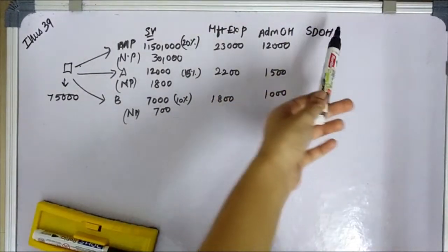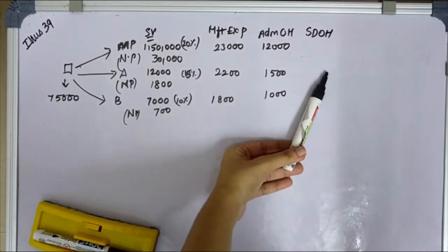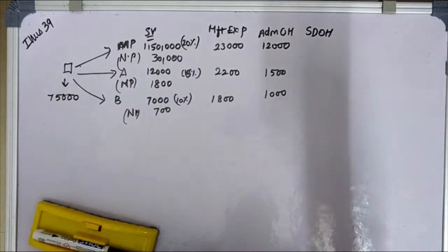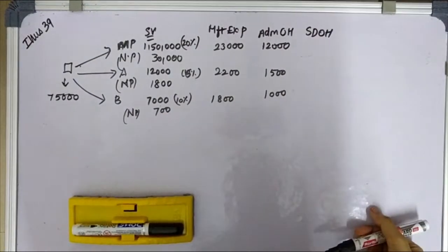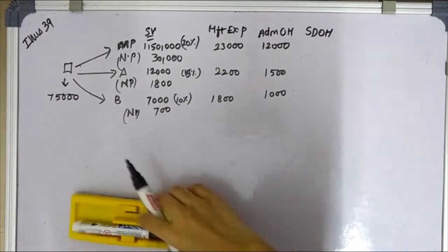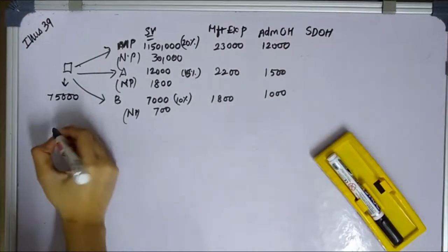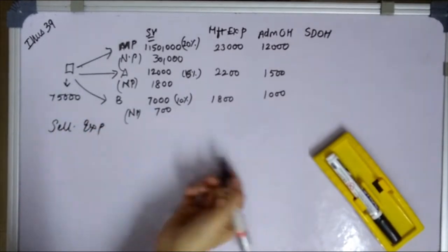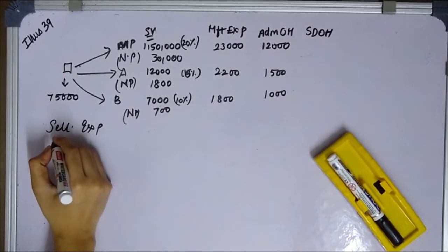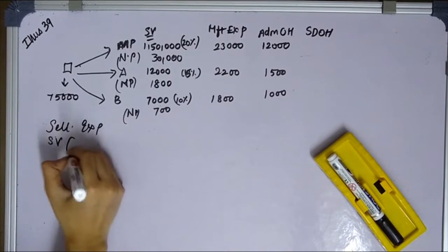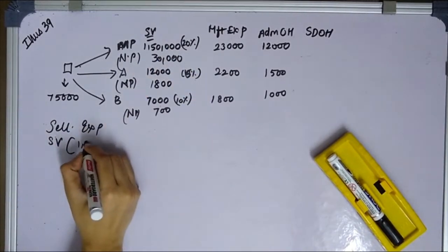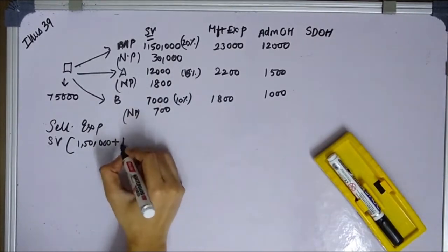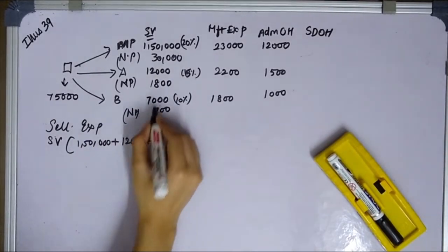The selling and distribution cost is computed from total sales: 1,50,000 plus 12,000 plus 7,000. The ratio of distribution of selling cost is 85% for main product, by-product A is 10%, and by-product B is 5%. Net profit percentages: main product 20%, by-product A 15%, by-product B 10%.